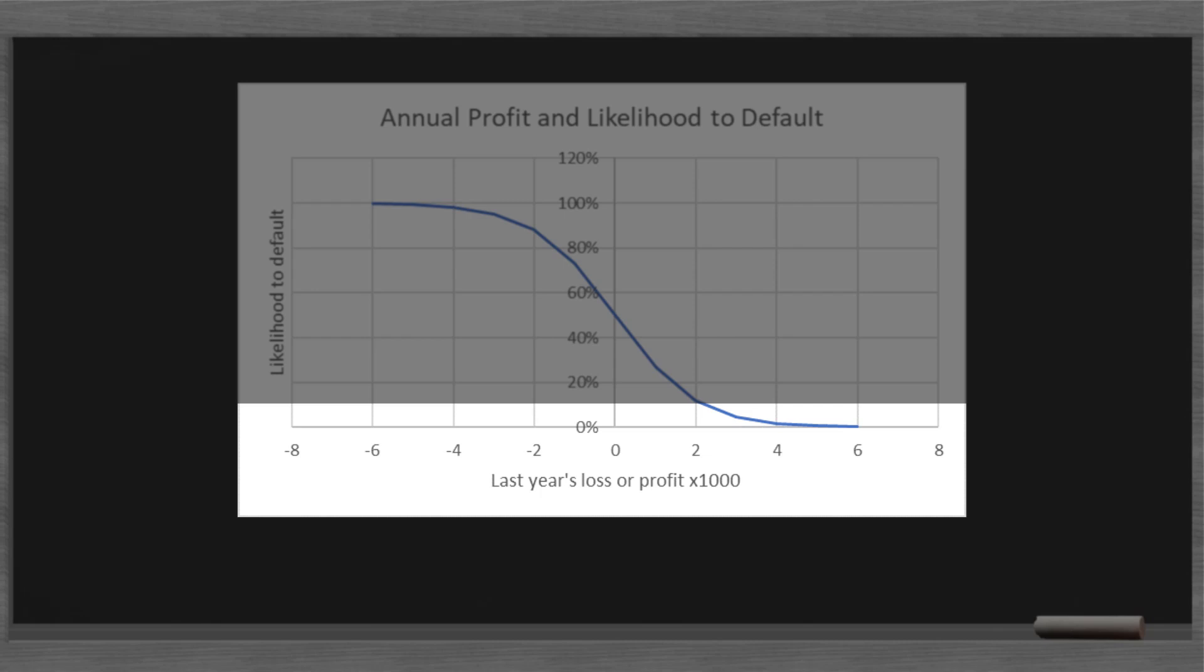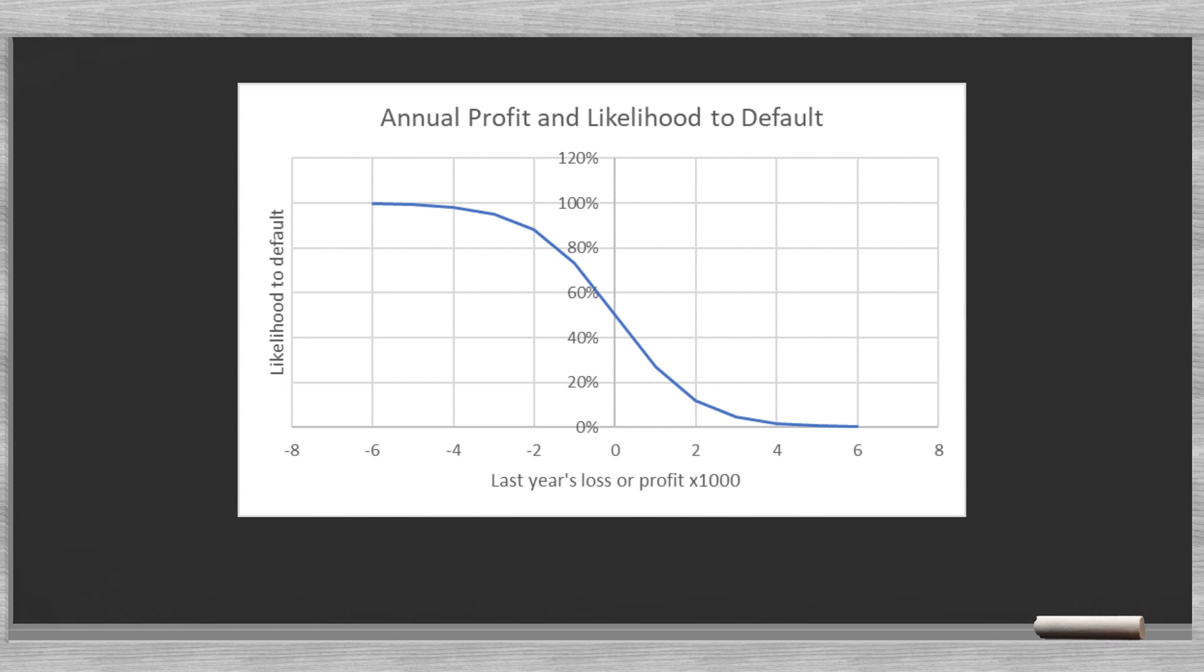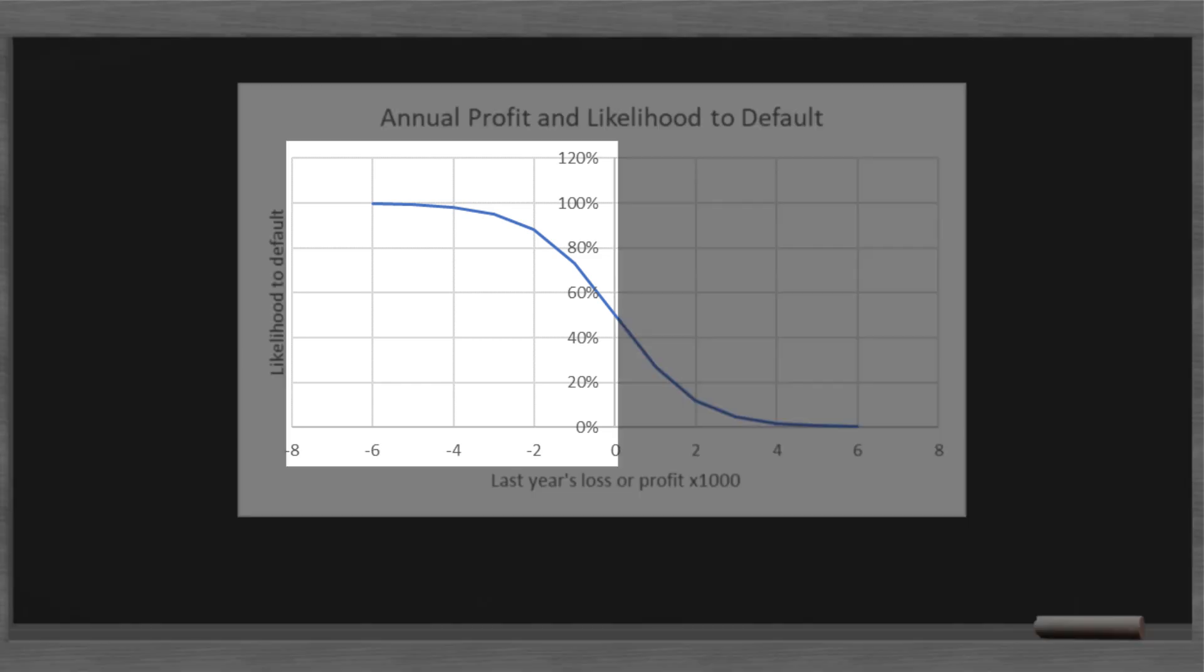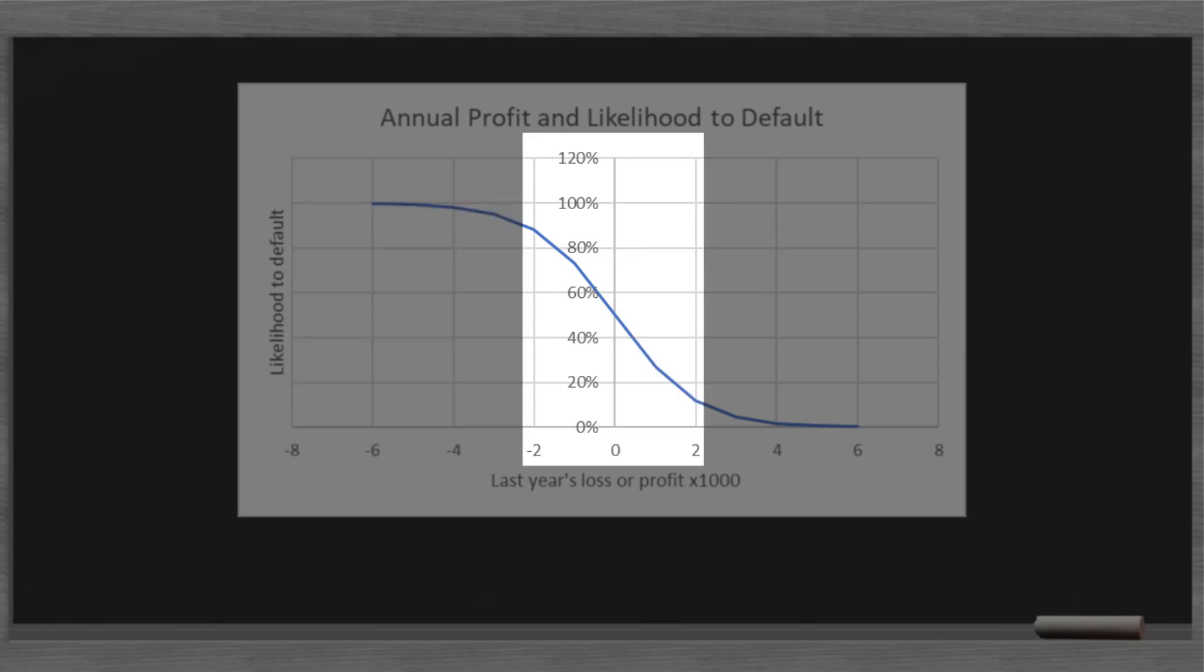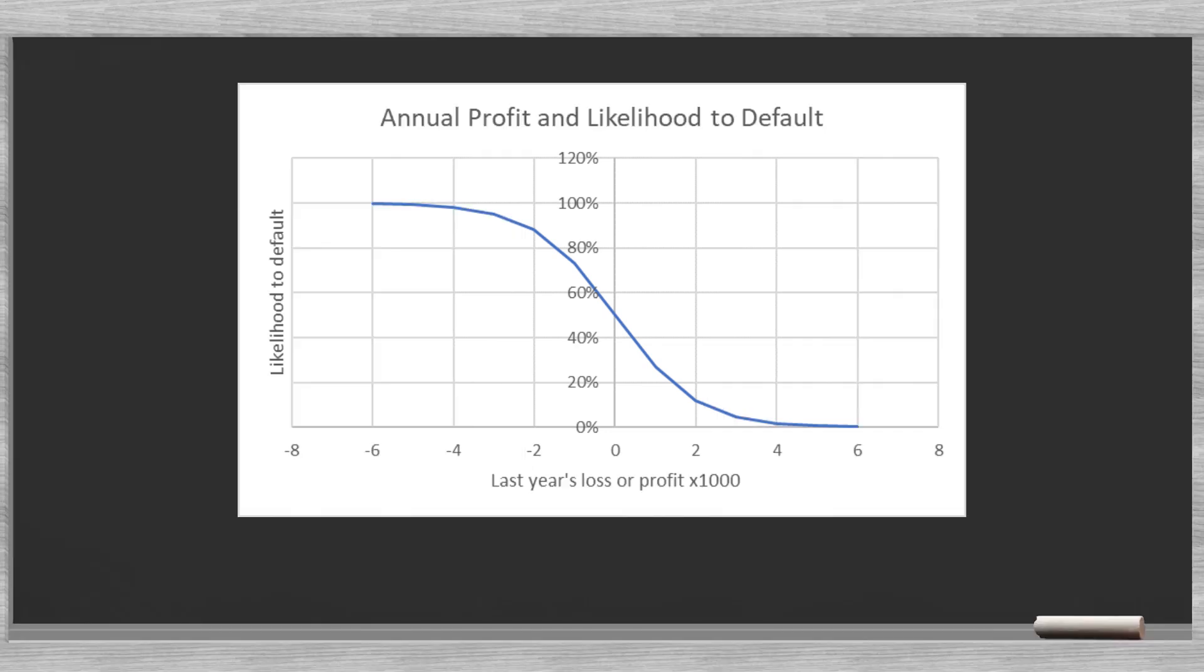The x-axis shows a client's profits or losses. The further right on the horizontal axis, the higher the profit and the lower the probability of defaulting. On the left side of the graph we see the losses. The higher the losses, the higher the probability that the client will default on his loan obligations. We notice that the S-curve has a steep slope between minus 2 and positive 2. As we move further to the left and to the right the curve flattens. A nice feature of this S-curve is that it stays between the floor of 0% and the ceiling of 100%.